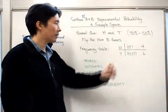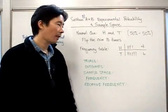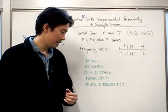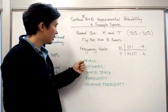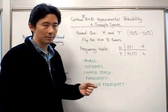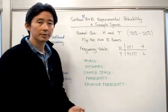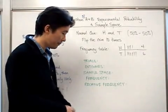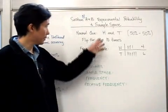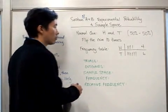Based on those ten coin flips, the frequency table shows: number of heads — four; number of tails — six. The most important thing is being able to differentiate between these key terms: trial, outcome, sample space, frequency, and relative frequency. So what is a trial? The trial is actually flipping the coin once.